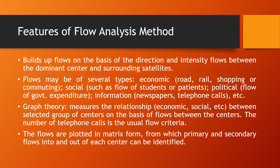The features of the flow analysis method: flows are analyzed on the basis of direction and intensity between the dominant center and surrounding satellites. One functional region is built up around one dominant town and surrounding satellites. Flows may be of several types: economic, social, political, and information. Economic examples include road flow, rail flow, shopping, and commuting. Social flows include flow of students and patients. Political flow refers to the flow of government expenditure. Information flow includes newspaper flow and telephone calls.